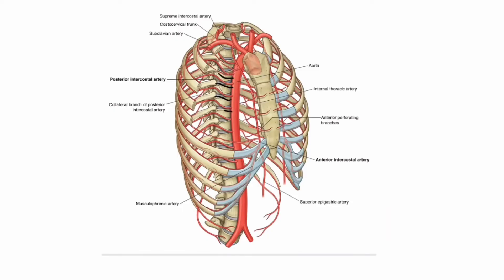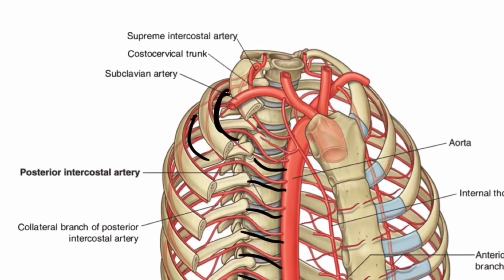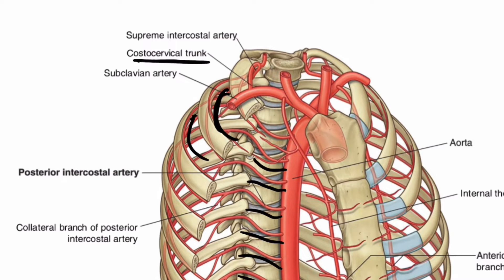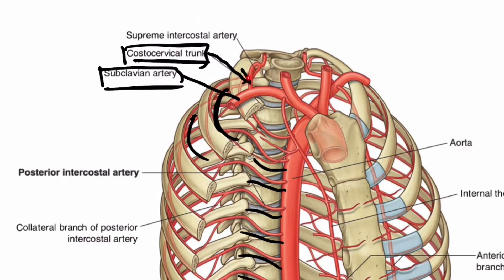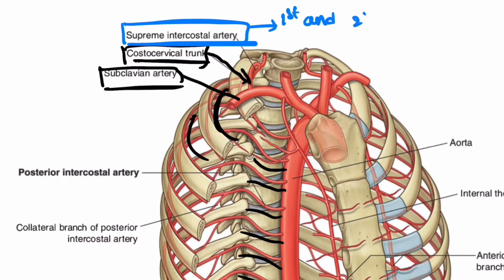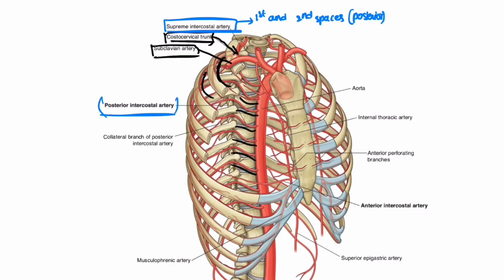In the diagram, these are the posterior intercostal arteries. The upper two intercostal arteries arise from the costocervical trunk of the subclavian artery. From the costocervical trunk, the supreme intercostal artery arises, which supplies the first and second intercostal spaces posteriorly. The remaining nine intercostal spaces are supplied by the posterior intercostal arteries arising from the aorta.